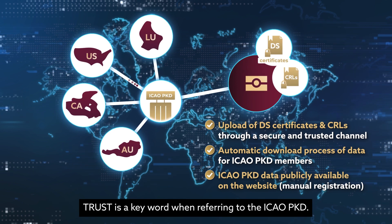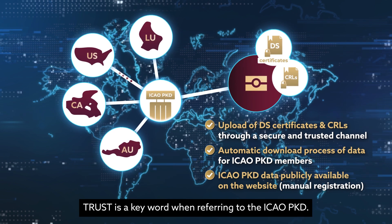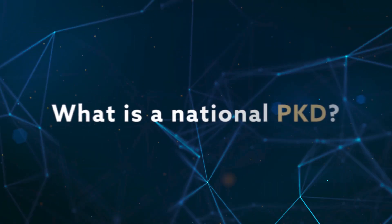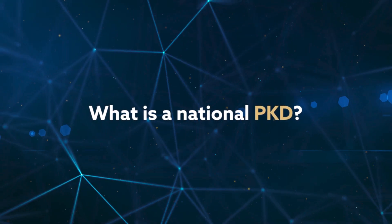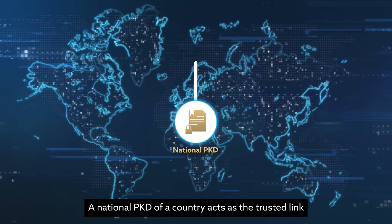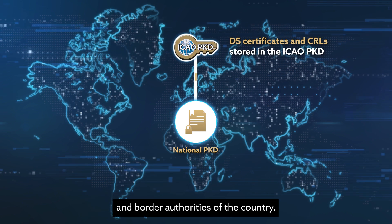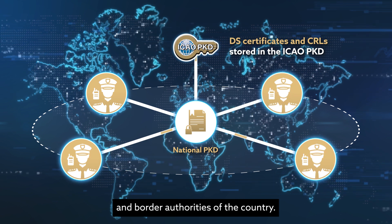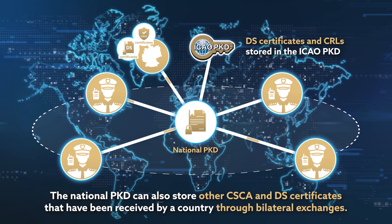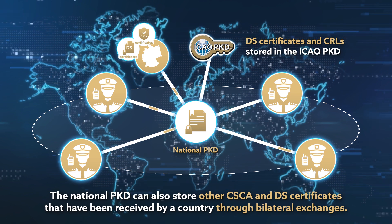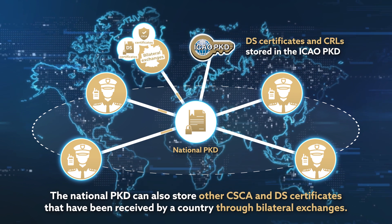Trust is a key word when referring to the ICAO PKD. A national PKD of a country acts as the trusted link between the ICAO PKD and the border authorities of the country. The national PKD can also store other CSCA and DS certificates that have been received by a country through bilateral exchanges.